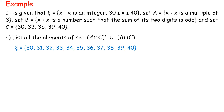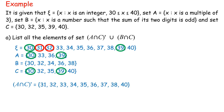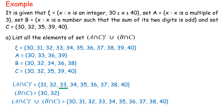Universal set = {30, 31, 32, 33, 34, 35, 36, 37, 38, 39, 40}. A = {30, 33, 36, 39}, B = {30, 32, 34, 36, 38}, C = {30, 32, 35, 39, 40}. Complement of (A intersect C) = {30, 32, 33, 34, 35, 36, 37, 38, 40}. B intersect C = {30, 32}. Complement of (A intersect C) union (B intersect C) = {30, 31, 32, 33, 34, 35, 36, 37, 38, 40}.